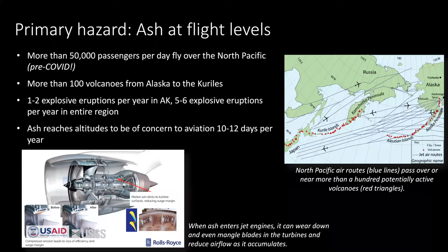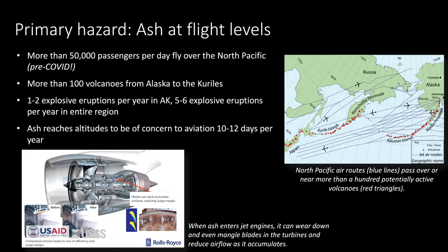In Alaska, the primary hazard is ash and aviation. There aren't many communities close enough to active volcanoes that pyroclastic flows and lava flows are a real hazard — ashfall is a hazard in some communities — but the major hazard is ash at flight levels. This is a pre-COVID number, but prior to the pandemic there were usually about 50,000 passengers per day transiting the North Pacific, and on average there are 10 to 12 days per year where ash reaches flight levels in Alaska.